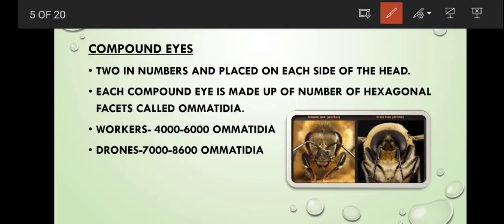Compound eyes: these are two in number, which are placed on each side of head. Each compound eye is made up of number of hexagonal facets called ommatidia. Ommatidia varies among workers and drones. There are 4,000 to 6,000 ommatidia present in workers, but in drones there are 7,000 to 8,600 ommatidia.